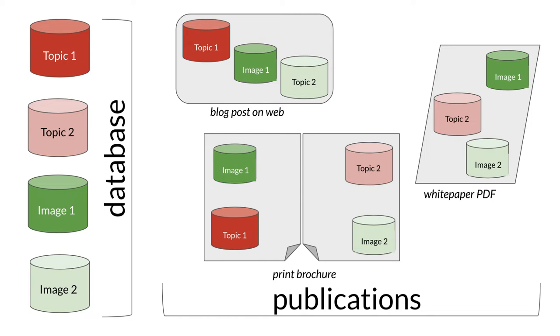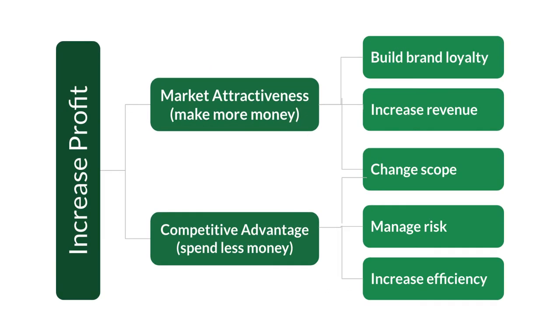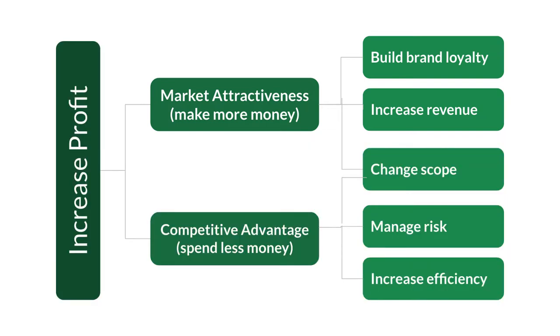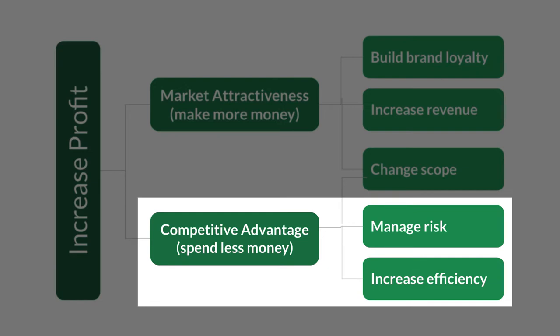Here's how the three concepts work together: a topic is created once and stored as a single source for reuse as a module in multiple publications or channels for delivering content. In terms of market attractiveness, content reuse means more consistency across all channels and all publications. One of the most common complaints from customers is they get different information from the same company — with a single source of truth for content, that issue is solved.